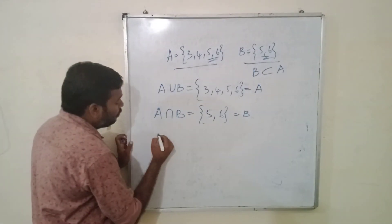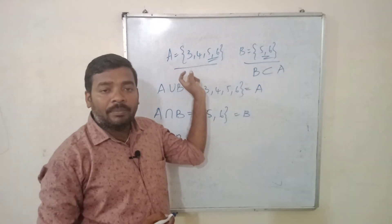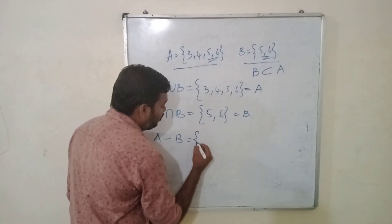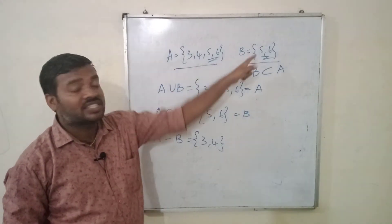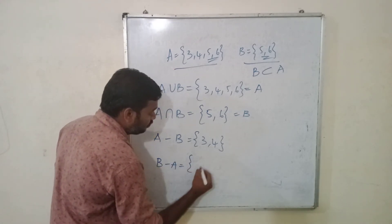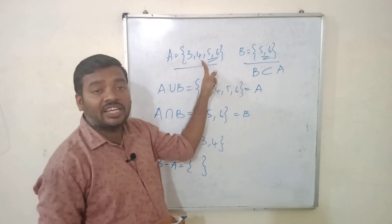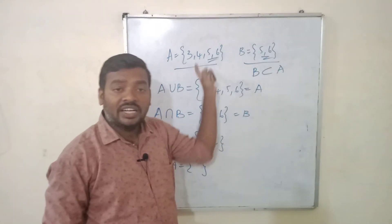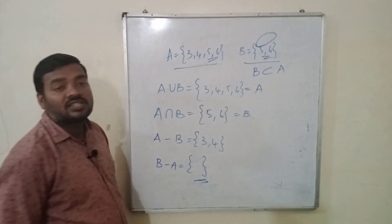Let us go for A minus B. A minus B means every element of A present in A but not in B — that will be 3 and 4. And if you go for B minus A, that will be the empty set, because every element of B is present in A. 5 and 6 are present in A, so there are no elements of B that are not in A. So B minus A is the empty set.